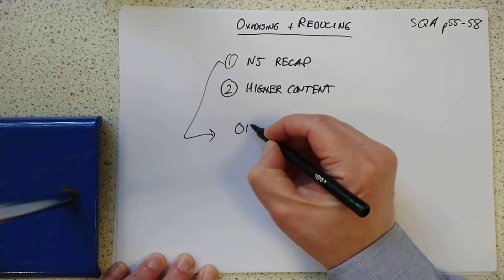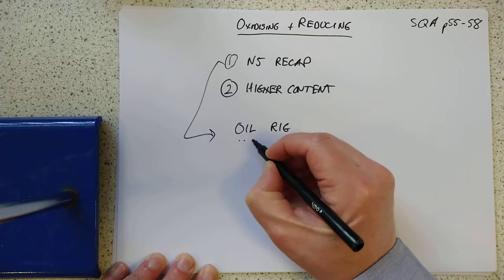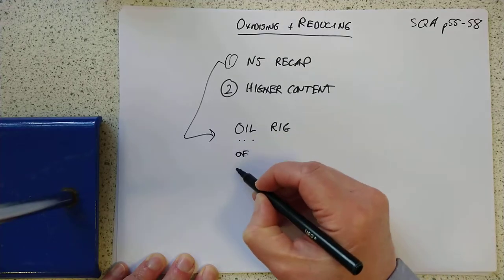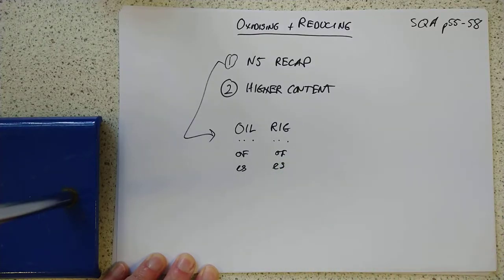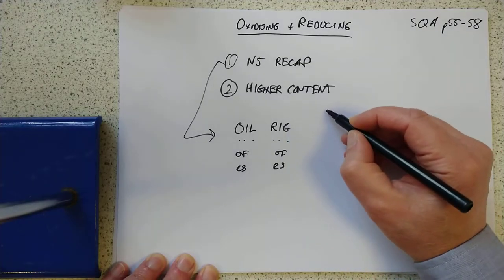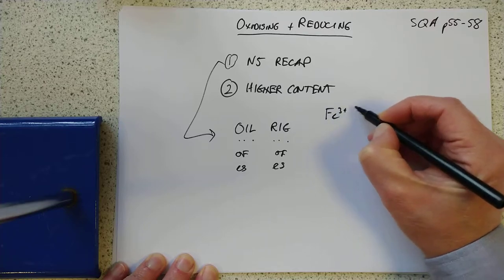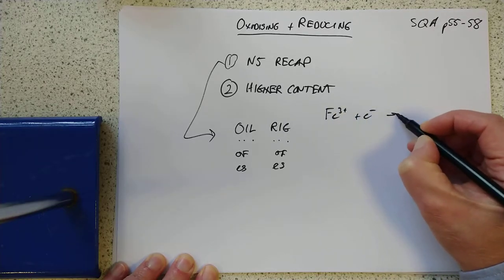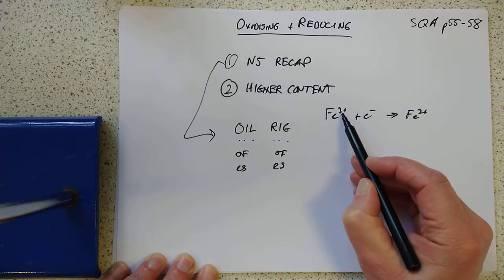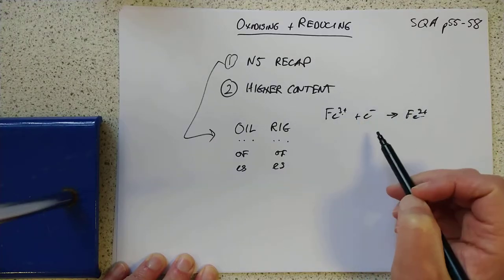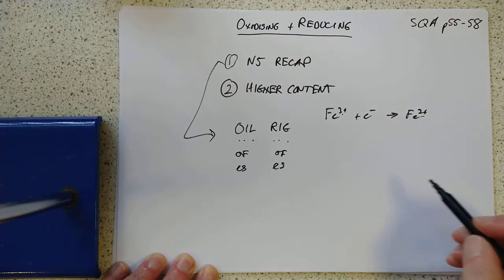This is SQA pages 55 through to 58. Let's start with the N5 recap, what you're supposed to know. You're supposed to remember the oil rig thing for starters. Oxidation is loss of electrons and reduction is gain of electrons. How do you spot whether a given reaction is oxidation or reduction?